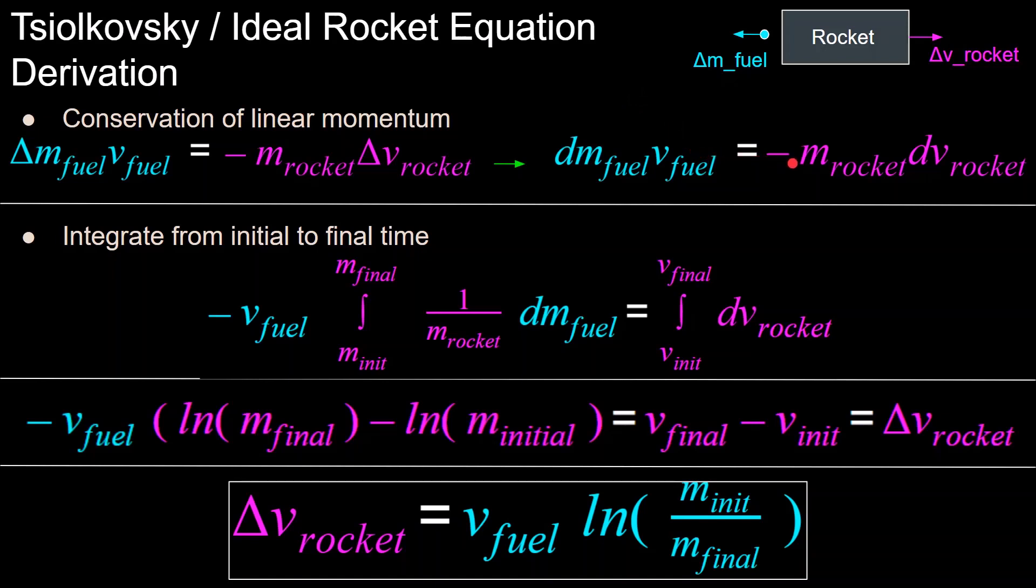We move the minus M rocket term to the left side of the equation and integrate from initial to final time of when the rocket is thrusting. We assume that the velocity of the outgoing fuel is constant, so it can be taken out of the integral. On the left side, we have the integral from initial to final mass of the rocket of one over the mass of the rocket times the infinitesimally small mass of fuel. On the right side, we have the integral of the infinitesimally small delta V caused from that small piece of mass expelling.